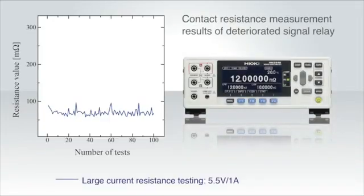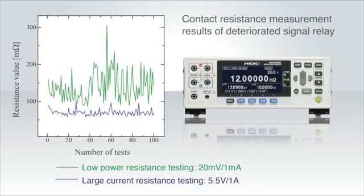Let's compare the measurement results from low power testing and large current testing. These are the results of using a large current to take the measurement. Now let's overlay these results with those taken from low power testing. As you can see, you can obtain higher resistance values using the low power resistance testing method.